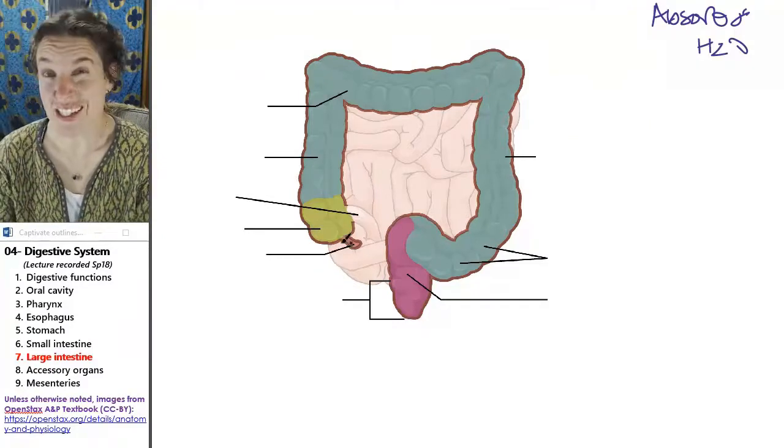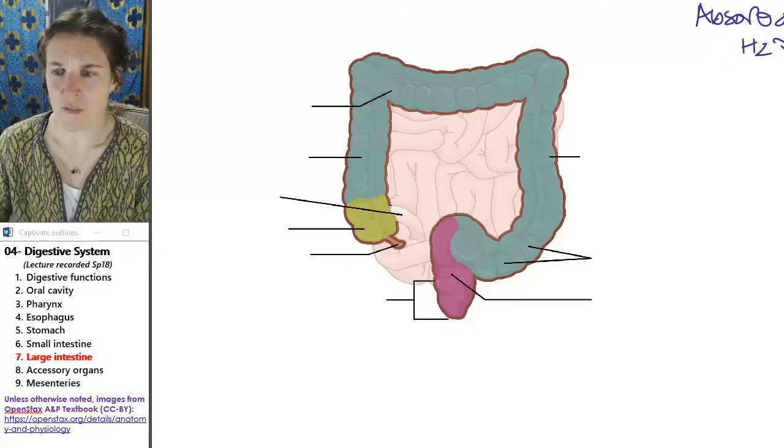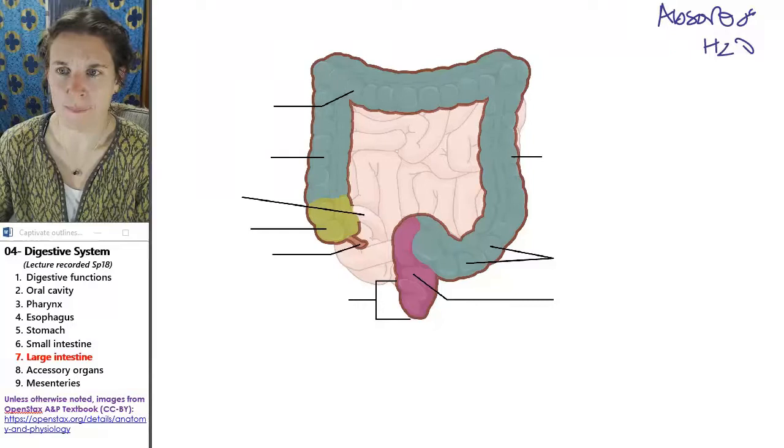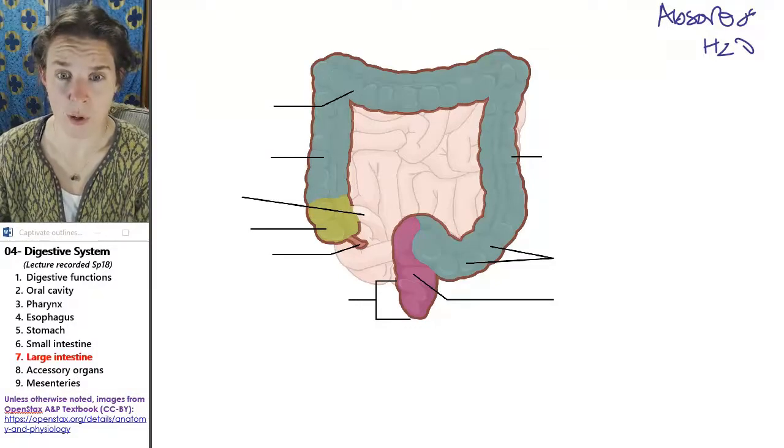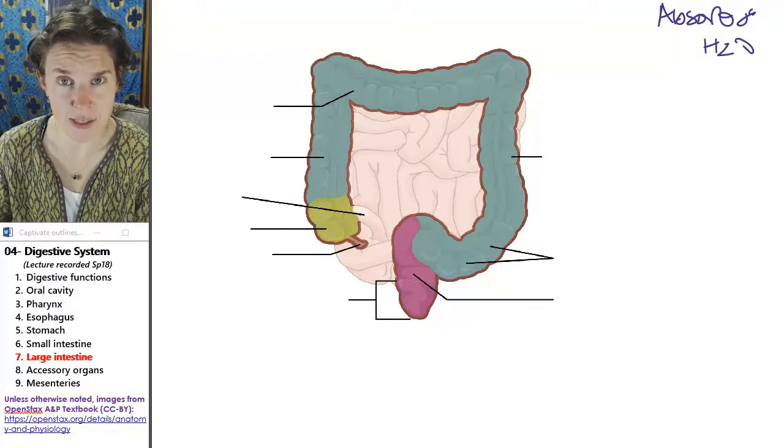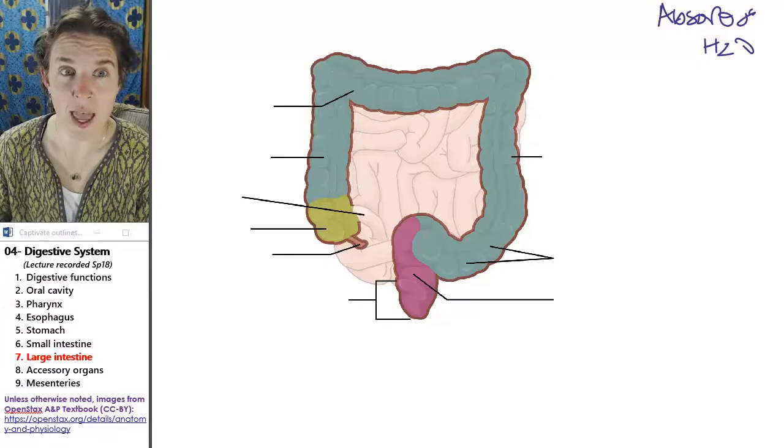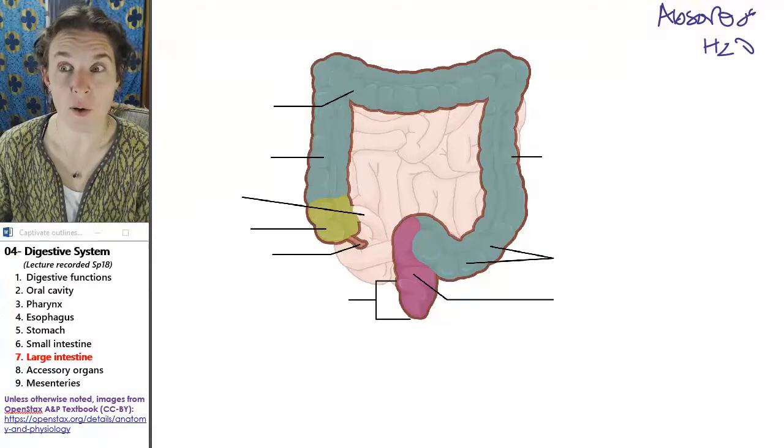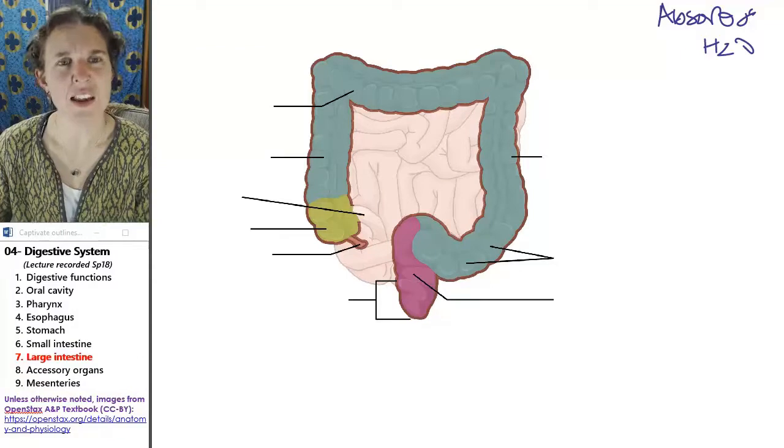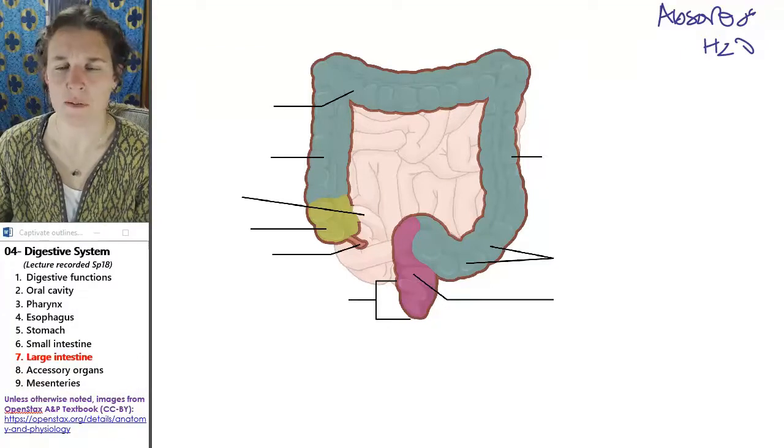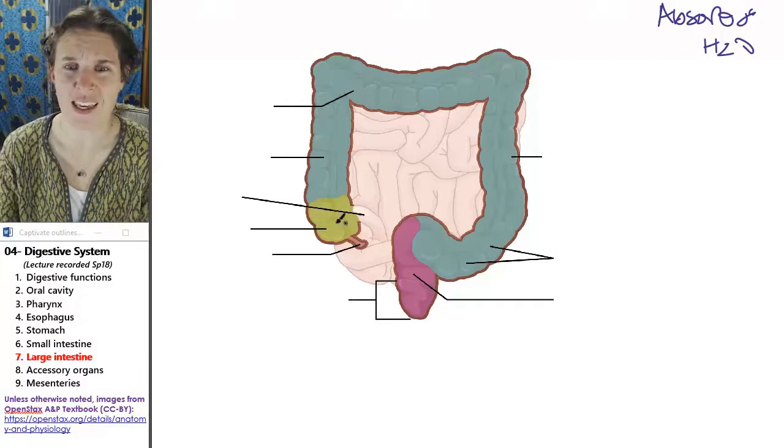All right. So your large intestine is making your doo-doos. That is why if you don't absorb all the water out of what enters the large intestine from the small intestine, then you're going to have diarrhea and all your water is going to go out your doo-doo. And a significant complication of diarrhea is dehydration because you can't keep your fluid in you.